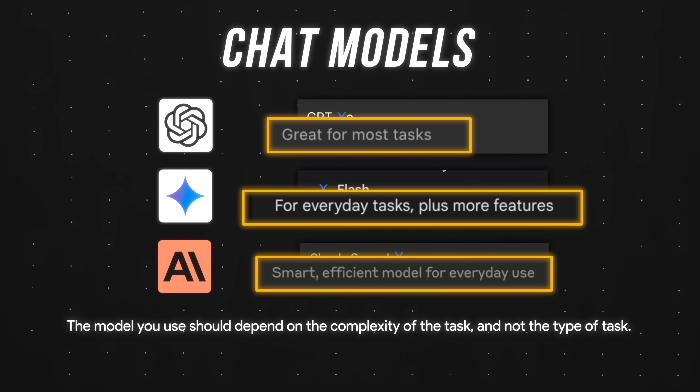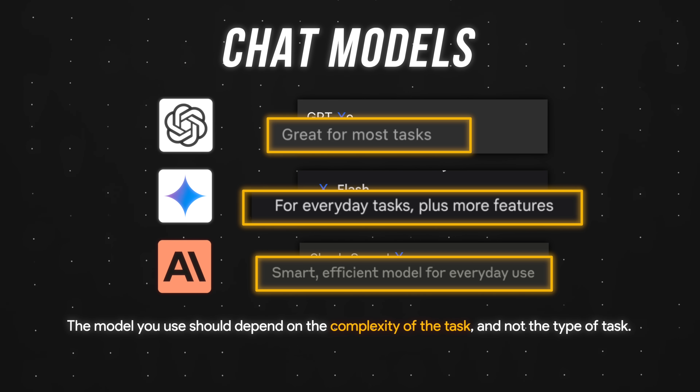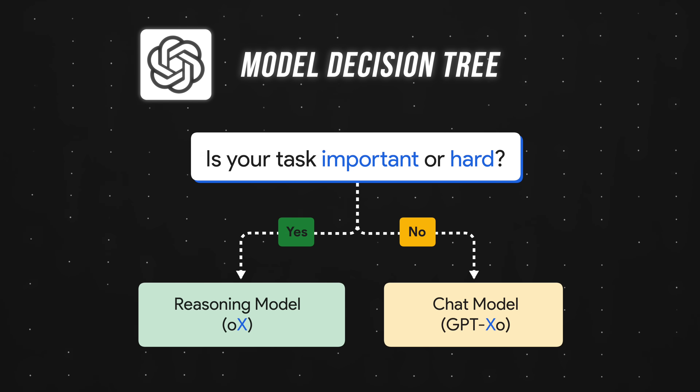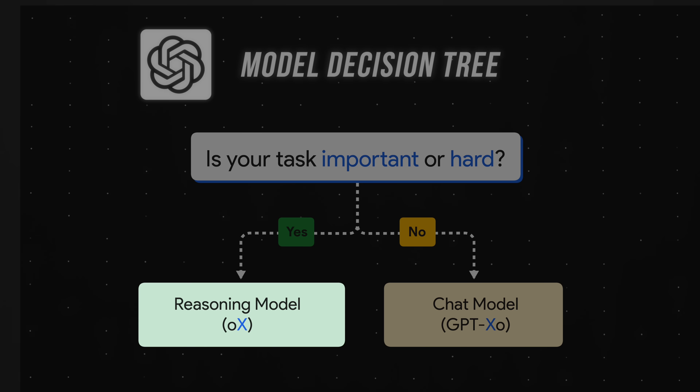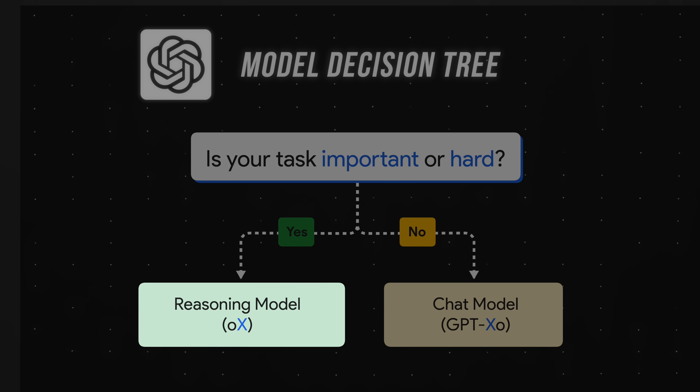The model you choose should depend on the complexity of the task, not the type of task. Closing the loop, most of us should default to reasoning models, since worst case, we wait a bit longer for a better answer.